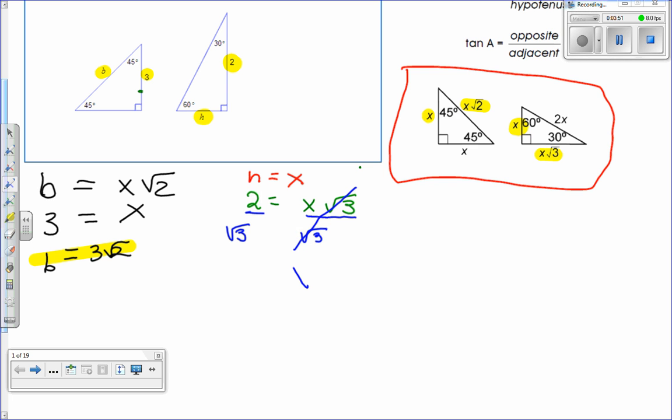Divide both sides by √3, and what happens is these cancel, those are gone. Now we're left with x equals 2 over √3.